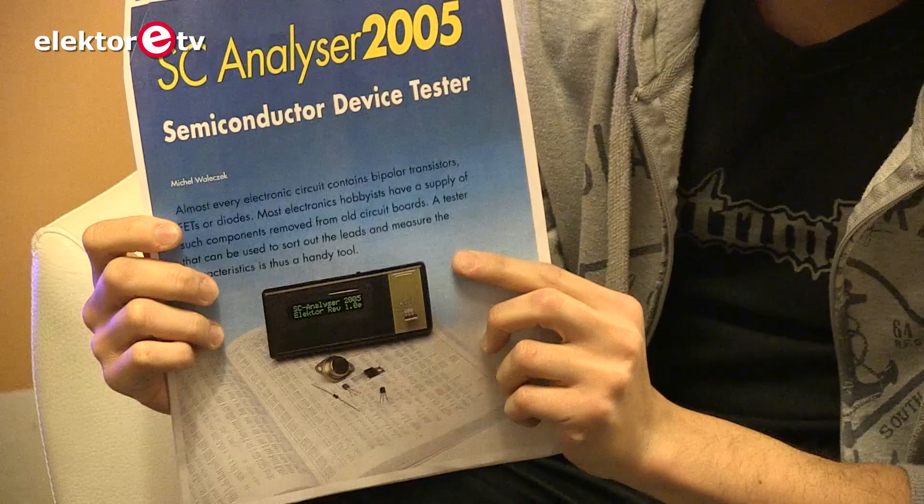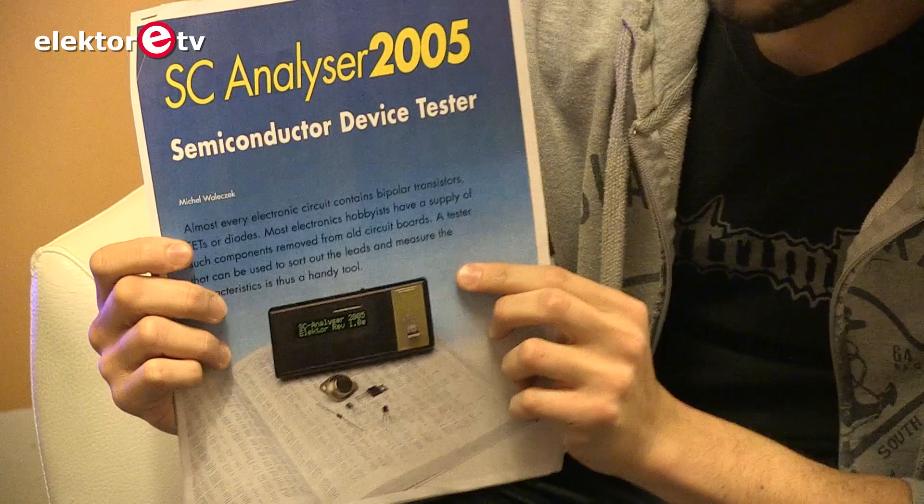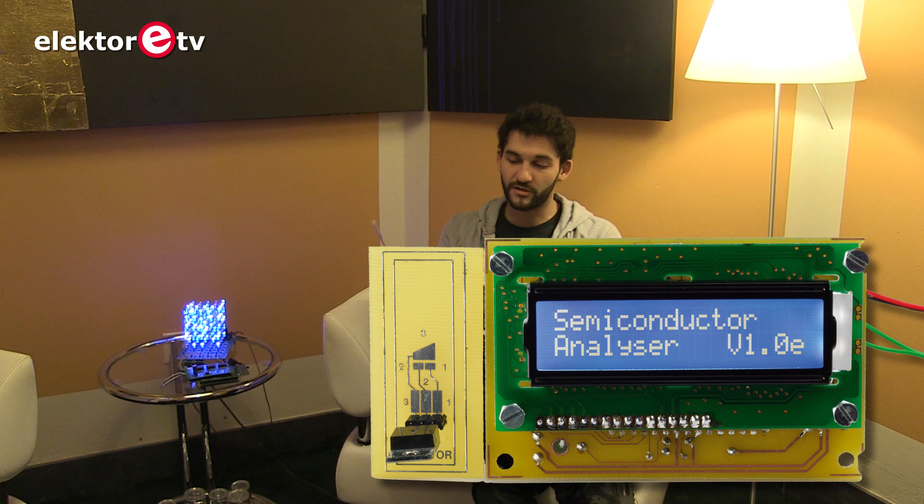Because sometimes it happens that you can get components from old circuit boards but either the ID, the name of the component is removed or you actually don't know the characteristics, so this device allowed you to sort out the leads and also measure some characteristics of the components.